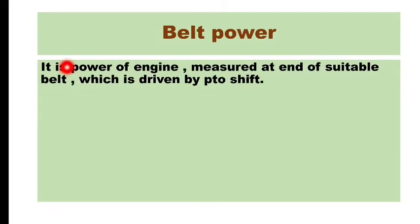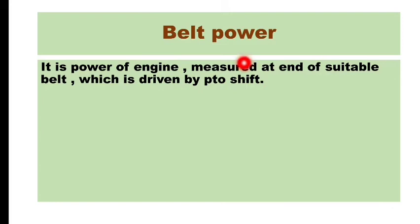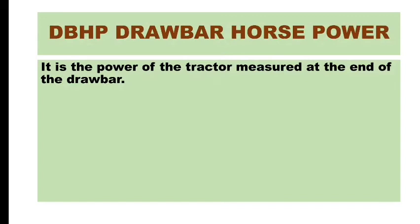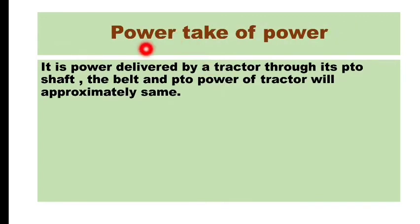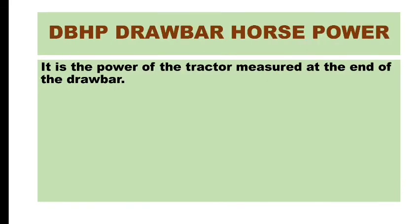Belt power is the power of the engine measured at the end of a suitable belt driven by the PTO shaft. It is very similar to power take-off (PTO) power, which is the power delivered at the tractor through its PTO shaft. The belt power and PTO power of a tractor are approximately the same.